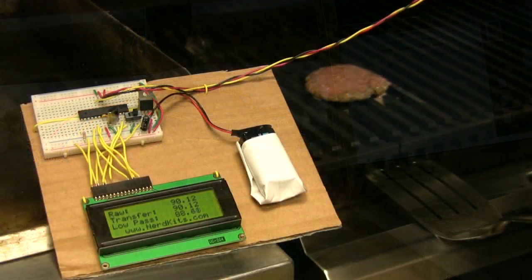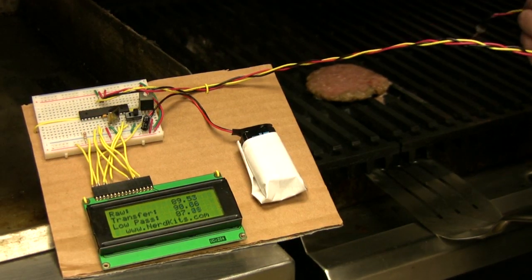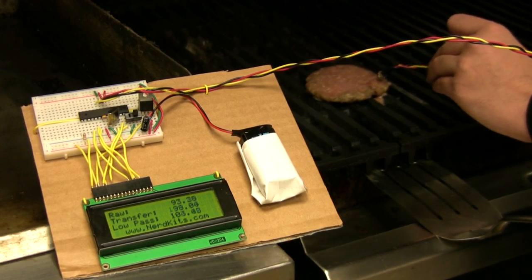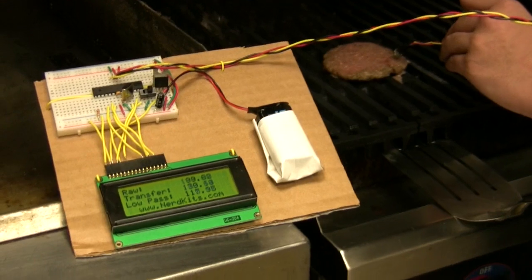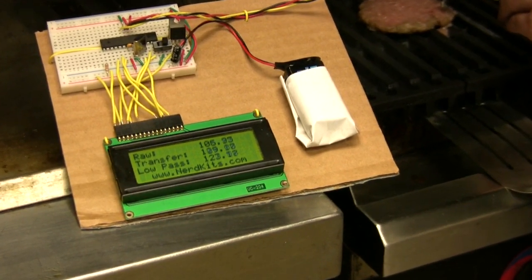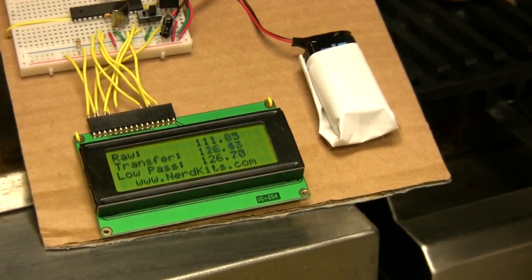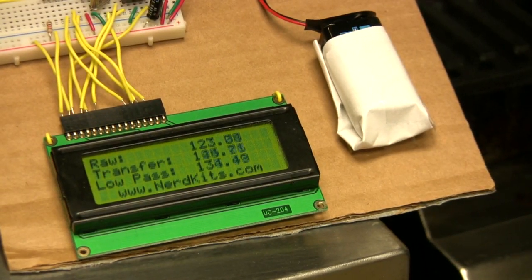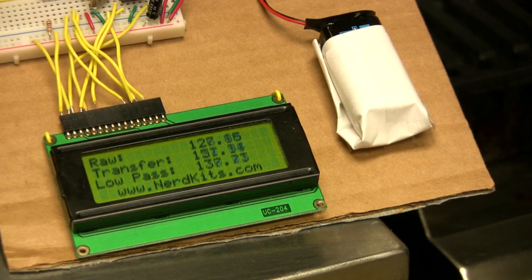I don't really want to have my laptop next to the grill. So we are using the NerdKit LCD to show the raw temperature measurement and the predicted value from our filter. You actually have all the electronics parts you need in the USB NerdKit to do this project. For more information about our kits, or more videos like this one, visit us at www.nerdkits.com. Happy grilling!